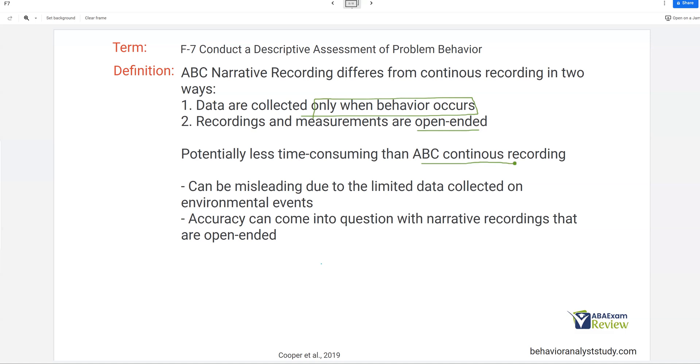With Continuous Recording, you're getting constant input and constant data on the environmental events occurring, whether or not the behavior is occurring as those events also occur. So, meaning you're going to possibly draw a lot more false correlations with narrative recording than you would maybe with Continuous Recording. And then, accuracy can come into question. You need to be well-trained to do good narrative recording, because you can fall into the trap of becoming very subjective with your narrative. And we want to avoid that whenever possible.